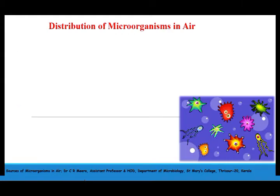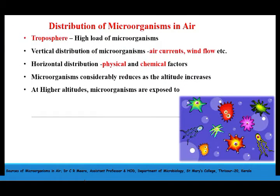Distribution of microorganisms in air. The microorganisms are distributed vertically as well as horizontally in the air. Vertical distribution of microorganisms in the air is controlled by air currents and wind flow, whereas their horizontal distribution is affected by various physical and chemical factors.